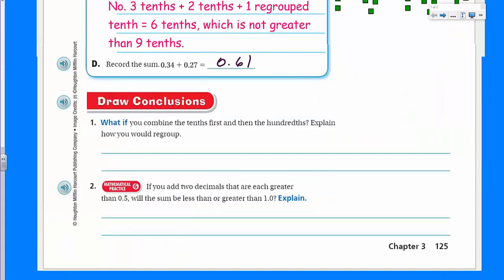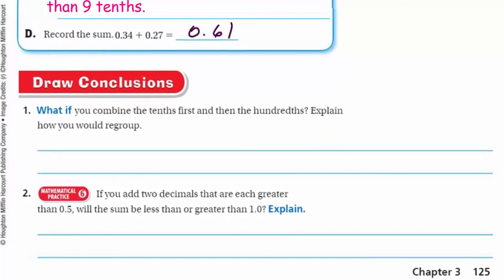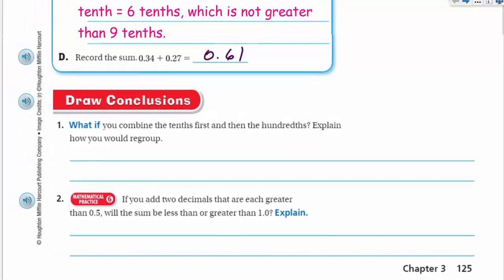Now we have draw conclusions. What if you combine the tenths first and then the hundredths? Explain how you would regroup. Well, I would still have to regroup the hundredths the same way, by exchanging those 10 hundredths for 1 tenth, and then adding the regrouped tenth to the combined tenths.